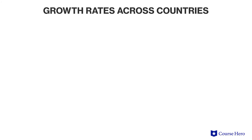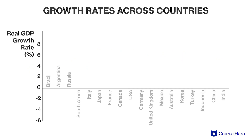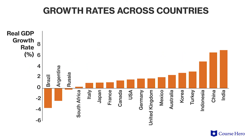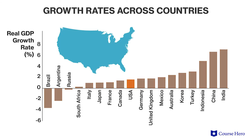It is also possible to compare growth rates across countries and see the effects of different economic strategies. For example, in 2016, India had a growth rate of 7.1%, which has been attributed to a sharp increase in investment and increased worker productivity. During that same time period, the United States, which has had a more stable economy and therefore does not see the same scale of fluctuations, experienced only 1.6% growth.